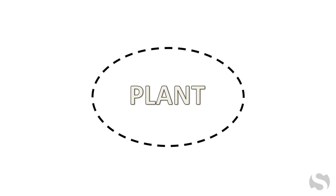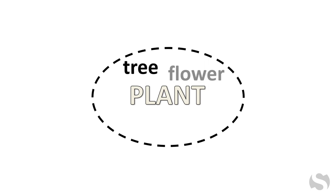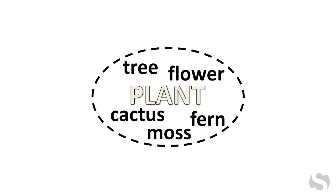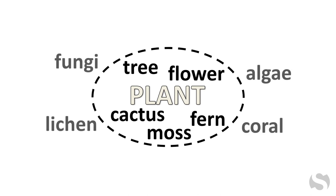Another science concept is plant. Critical features of plants include the capacity to generate food via photosynthesis. Knowing these critical features enables grouping organisms into the plant category or concept, and distinguishing them from non-plants.